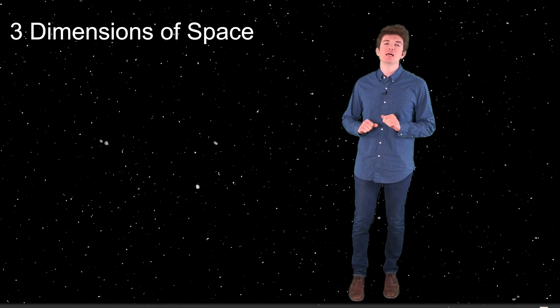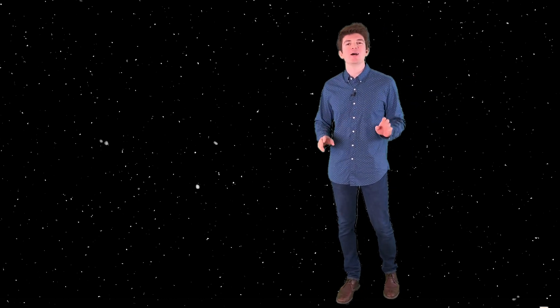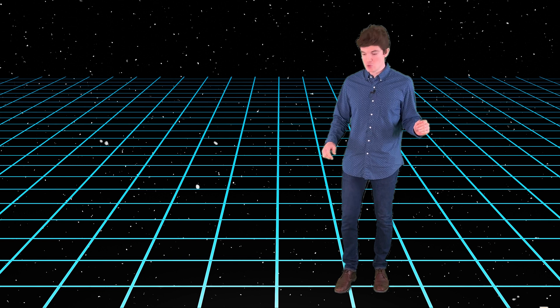To make things easier, let's start by just talking about two dimensions, forward-back and left-right. Welcome to our 2D universe. Objects in this 2D universe can move anywhere along this grid. They can move forward-backward, they can move left-right, or they can move some combination of the two.